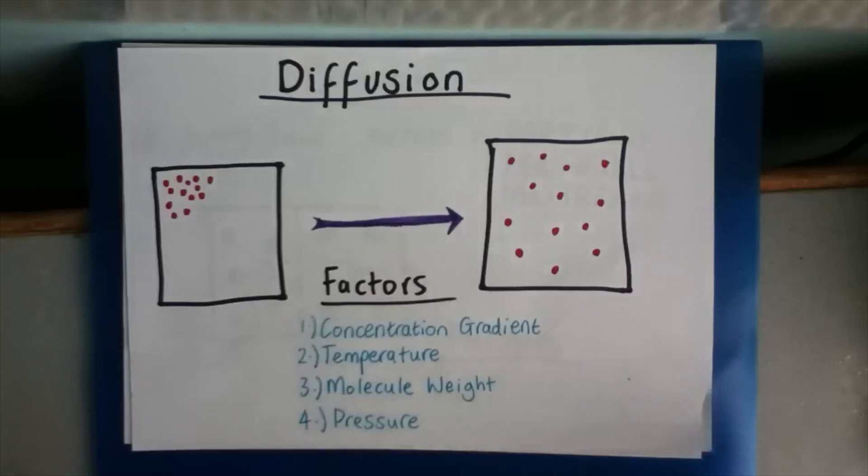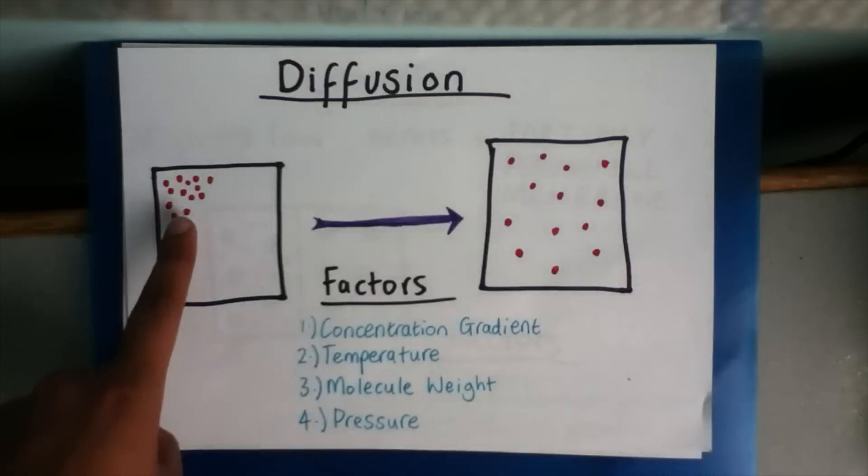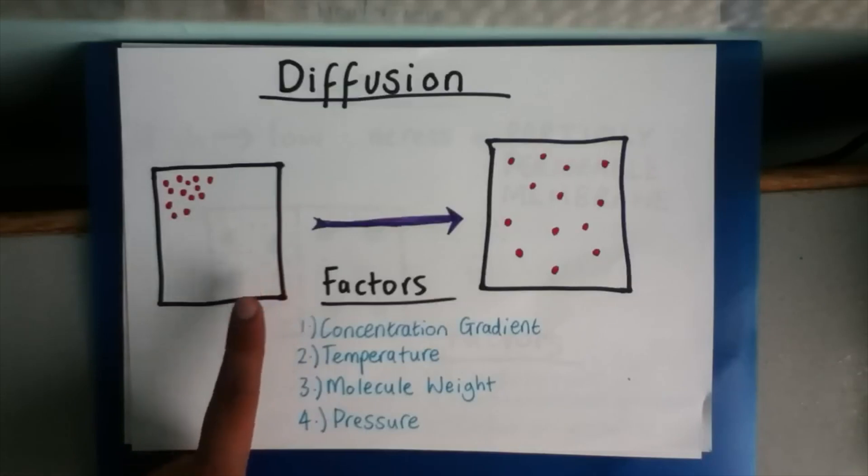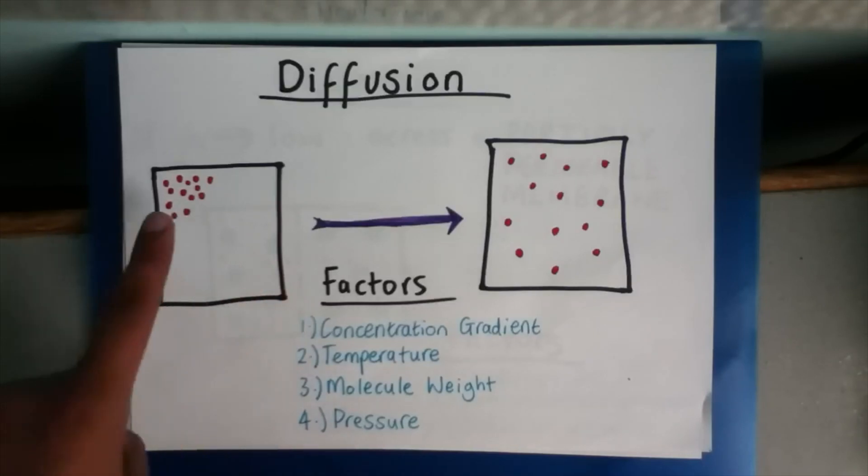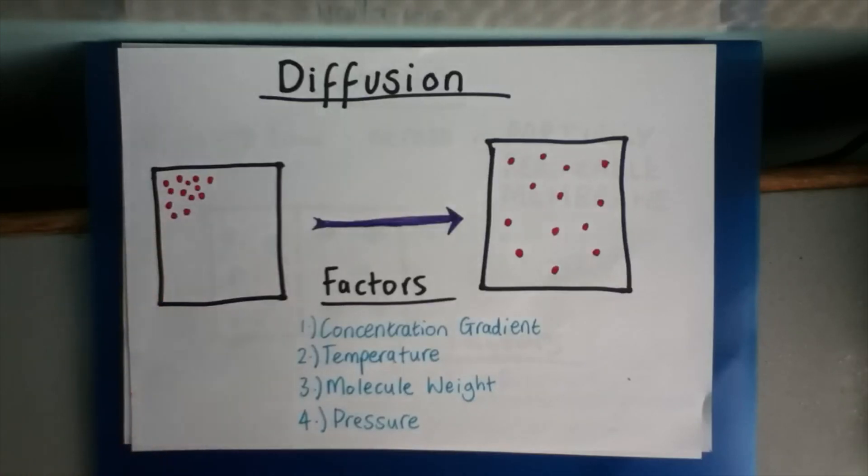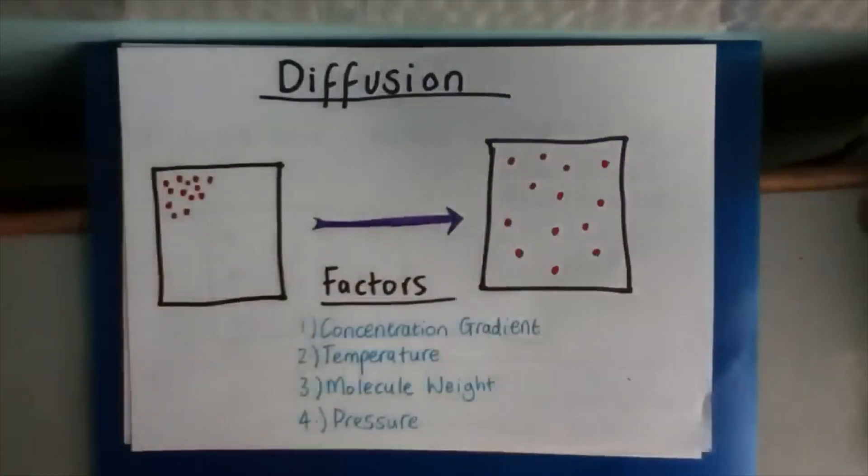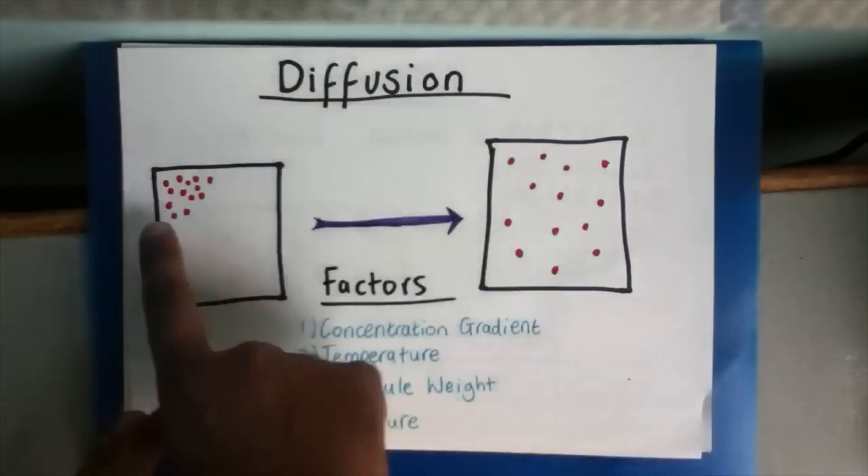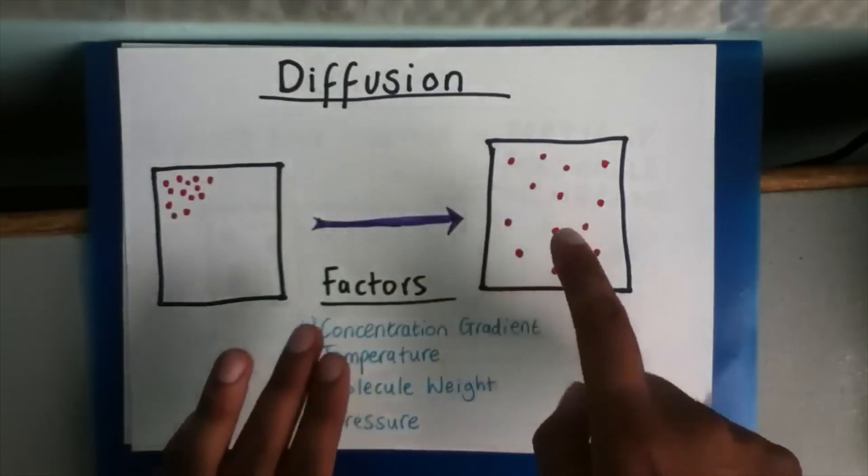Diffusion is the movement of molecules from a region of high concentration to a region of low concentration. Now, the reason this happens is because these molecules possess energy. They are moving around randomly because of something called Brownian motion. They possess energy and they're moving around randomly, bouncing off each other. And what will happen eventually is they will spread and fill out the entire container.